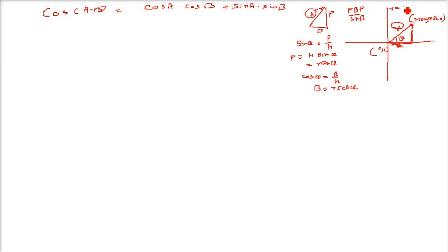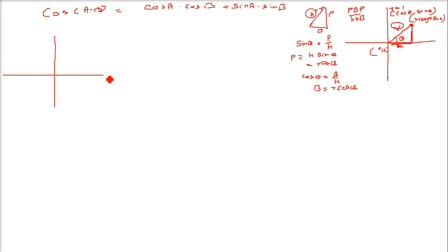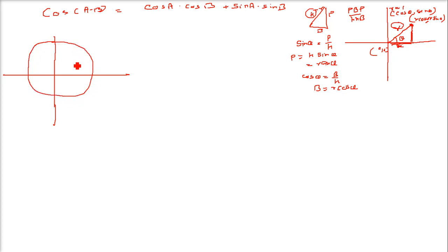Now if we take r as 1 (unit), the point becomes (cos θ, sin θ). These are the coordinates. So this is what we are going to use. Let us take a unit circle — that is a circle with radius 1.